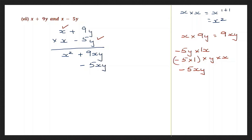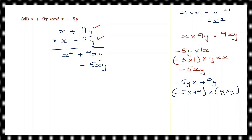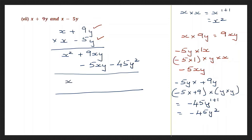Now let's go on to minus 5y into plus 9y: minus 5 into plus 9 into y into y — minus into plus is minus, 5 nines are 45 — into y to the power of 1 plus 1, which is minus 45y squared. So x squared, and signs are different — put the sign of the bigger number and subtract: 9 minus 5 is 4, giving 4xy, minus 45y squared.